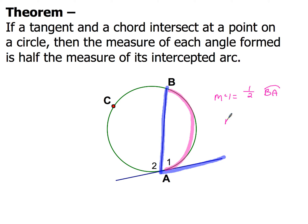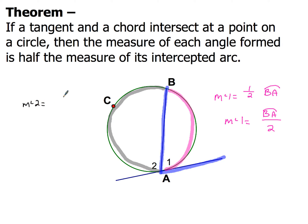Some people might write it like this because it's a little bit easier — they might write BA with the arc symbol above it and then just divide it by two. Either way you want to write it, no big deal. Now to find angle two, I could use arc BCA, and the measure of angle two would just be half of arc BCA, written as arc BCA over two. That's how I could find angle two using arc BCA.